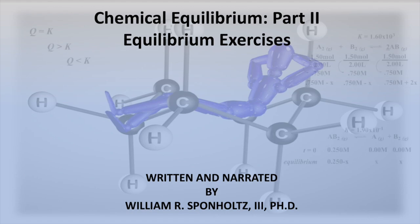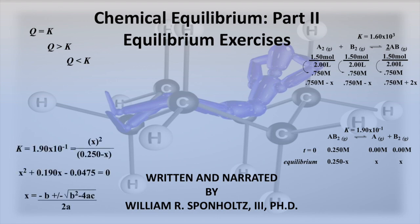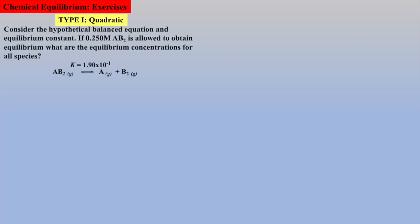Welcome to Part 2 of Chemical Equilibrium Review. This review material will focus on example exercises to review and reinforce Q vs K, more challenging exercises that will require the quadratic formula, and employment of the 5% rule or rule of 100 to simplify our calculations, as well as some other tricky equilibrium problems that the beginning student may encounter. It is worth mentioning that the student should have first viewed Part 1 of this review to better grasp these principles.